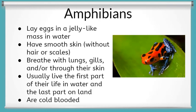Amphibians are a class of animal that lay eggs in a jelly-like mass in the water, have smooth skin without coverings such as feathers, hair, or scales, and are cold-blooded. Amphibians are unique in that they are able to breathe through gills, lungs, and/or their skin, depending on their stage of life and what species they are. Amphibians also hatch in the water and live in water for the first part of their life, but change to become land-dwelling for the second part of their lifespan.